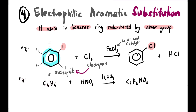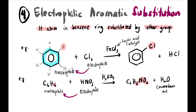Another example uses benzene written as C6H6. One hydrogen is replaced by NO2, so only 5 H remain. Benzene is the nucleophile and is attacked by the electrophile, making this electrophilic aromatic substitution. There is a by-product H2O sometimes not mentioned. H2SO4 is the catalyst in this case.